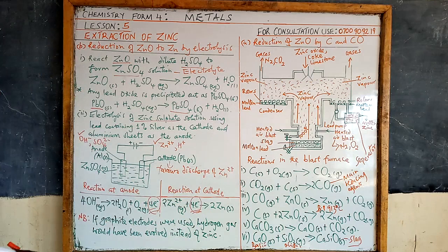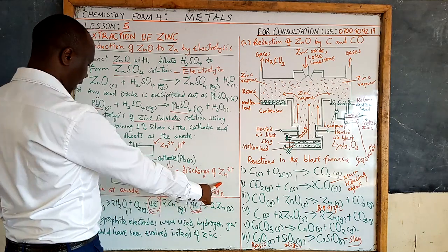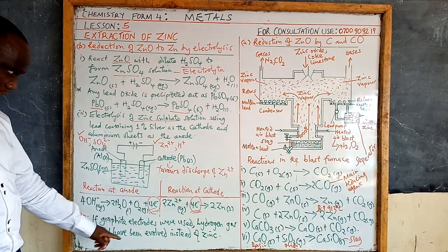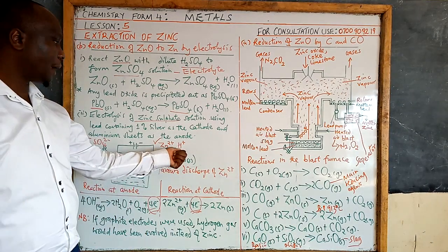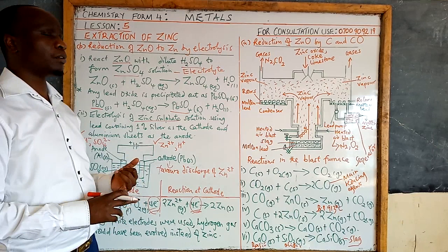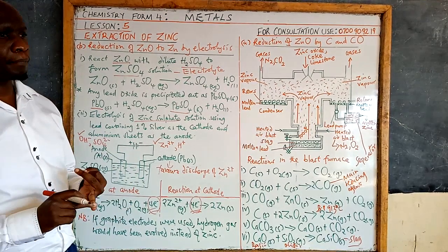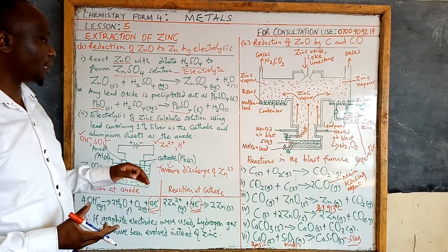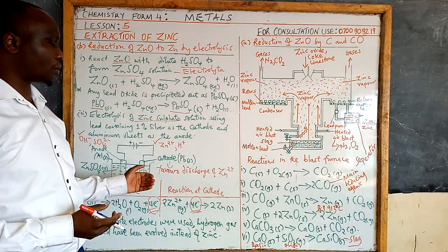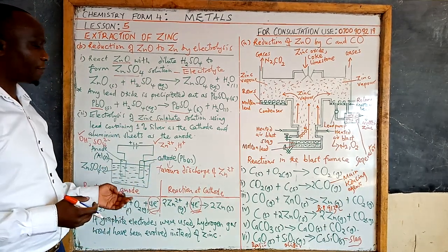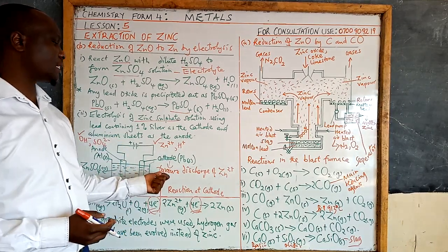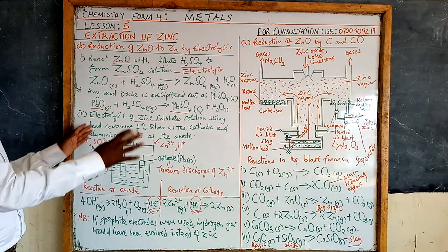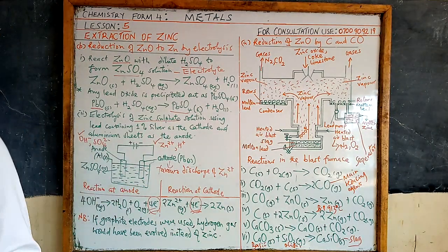Electrons lost at the anode must equal electrons gained at the cathode. To clarify: if graphite or inert electrodes were used, hydrogen gas would be evolved instead. This relates to the three factors affecting preferential discharge: position of ions in the electrochemical series, concentration, and nature of the electrode. Zinc is above hydrogen in the electrochemical series, so hydrogen ions would normally be favoured. But due to the nature of the lead electrode used, zinc ions are preferentially discharged.